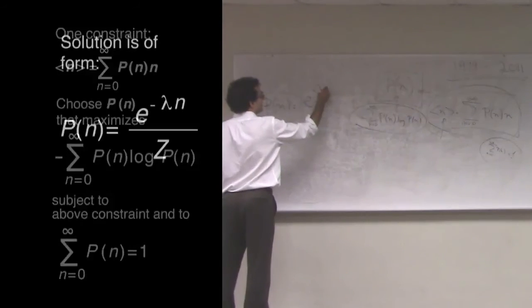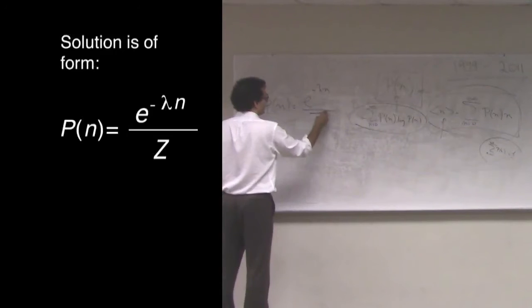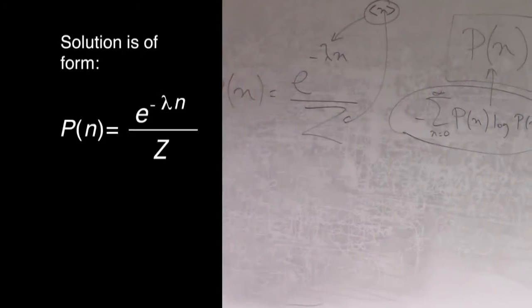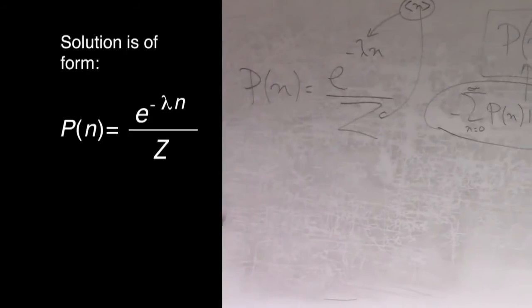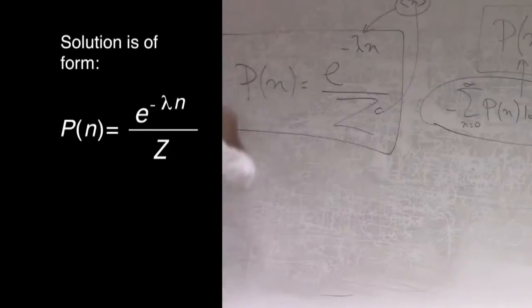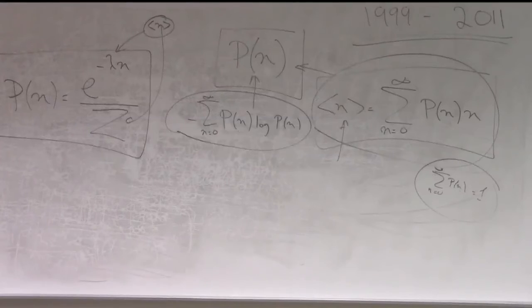And so we know what this functional form will look like. It looks like something like e to the negative lambda n, all over z, and then all we have to do is fit lambda and z, so that we reproduce the correct abundance that we see in the data. So this is the maximum entropy distribution. It's also, of course, an exponential model. It has an exponential form.